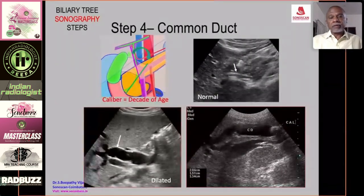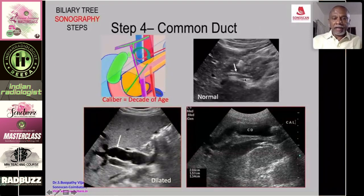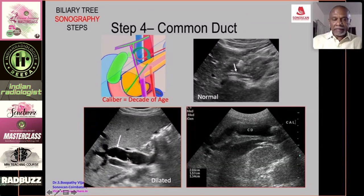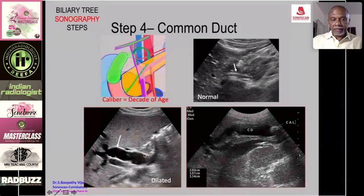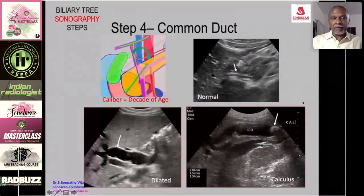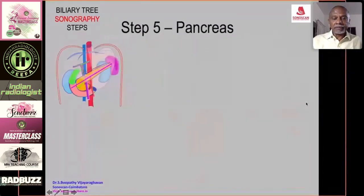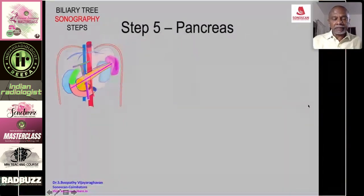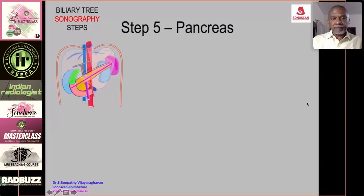The normal common duct caliber equals the decade of the patient's age. Here the common duct is dilated and cylindrical, and when traced, a calculus is seen in the distal common bile duct — the calculus causing obstruction.